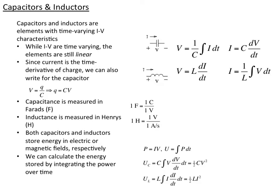The IV characteristics are here. For a capacitor — this is the symbol for a capacitor — we have current flowing in and a voltage across it. That voltage is equal to 1 over the capacitance times the integral of I dt. Or put another way, the current equals the capacitance times the change in voltage.